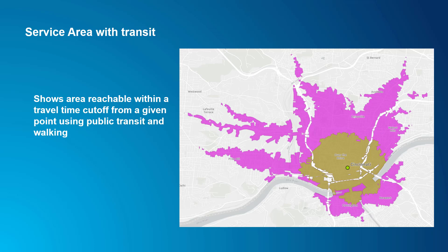The image here shows the difference. The smaller green service area shows the area reachable by walking from that location within 30 minutes, and the larger pink one shows the area reachable by walking and public transit within 30 minutes at 8 a.m. on a Wednesday. You can clearly see that the reachable area increases significantly when the traveler can take public transit. To do something like this, we need to include the public transit data in the network dataset, and I'll show you how to do that in one of the upcoming videos.